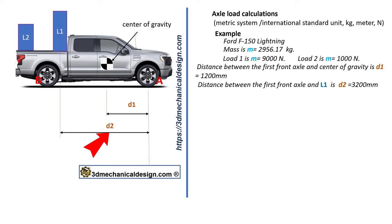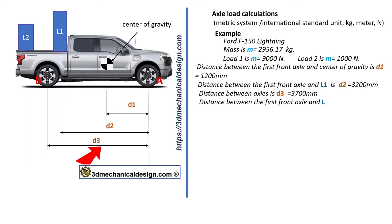Distance between axles is D3 equals 3700 millimeters. Distance between the first front axle and L2 is D4 equals 4200 millimeters.